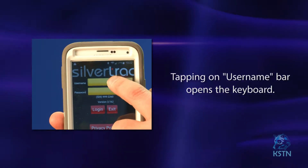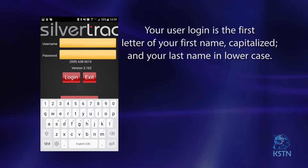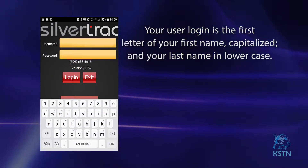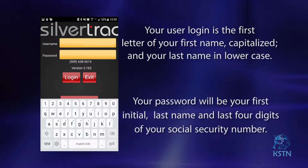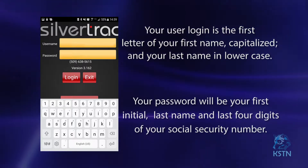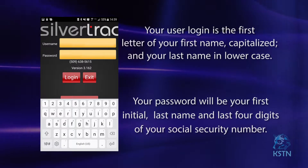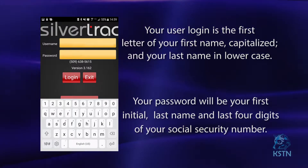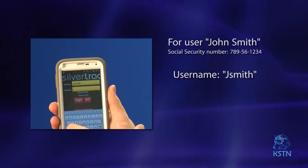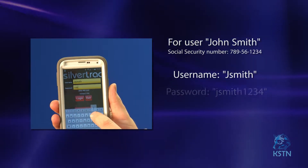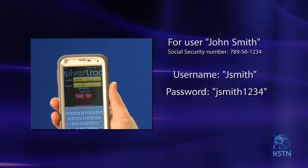Tapping on the username bar will open the keyboard on the phone. Your user login is the first letter of your first name capitalized and your last name in lowercase letters. Your password will be all lowercase, which is the first letter of your first name, your full last name, and the last four digits of your social security number. For example, for user John Smith, his username would be JSmith, and his password would be JSmith1234. Then tap login.